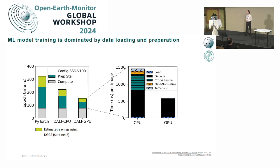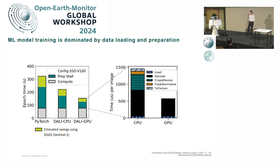This saving of data is important not only because we need to store and download it, but because in machine learning model training, time is usually dominated not by the actual computation but by data loading and preparation. All images need to be loaded into memory and decoded in an efficient way, and this takes time. If we need to load less data, we can reduce those times quite substantially.